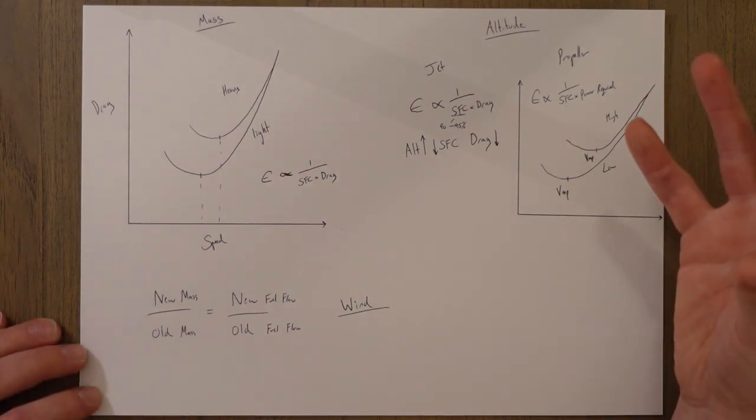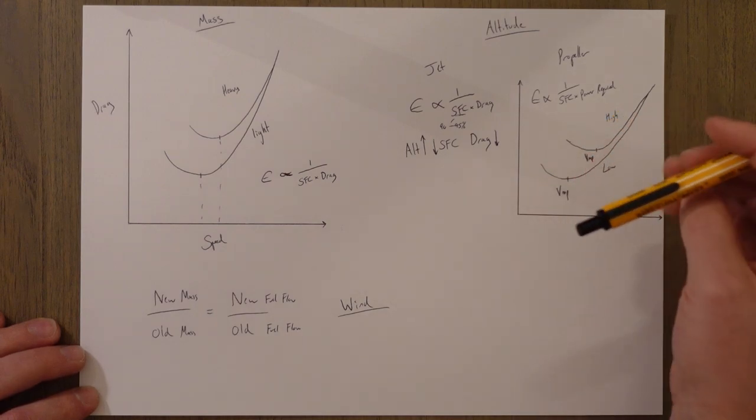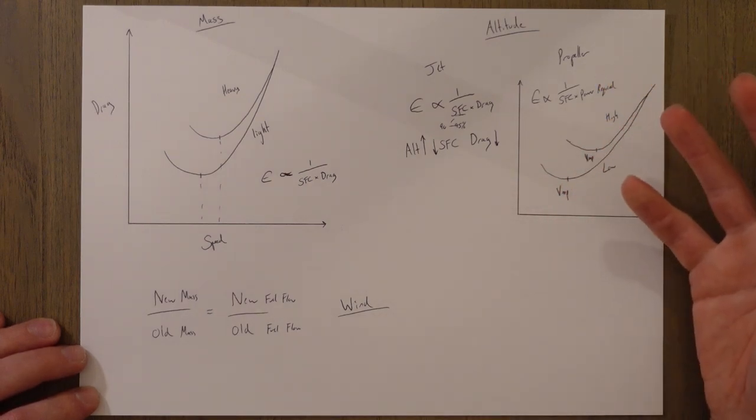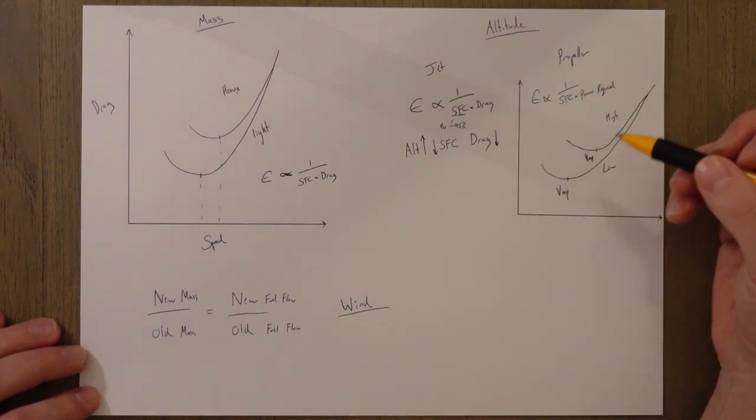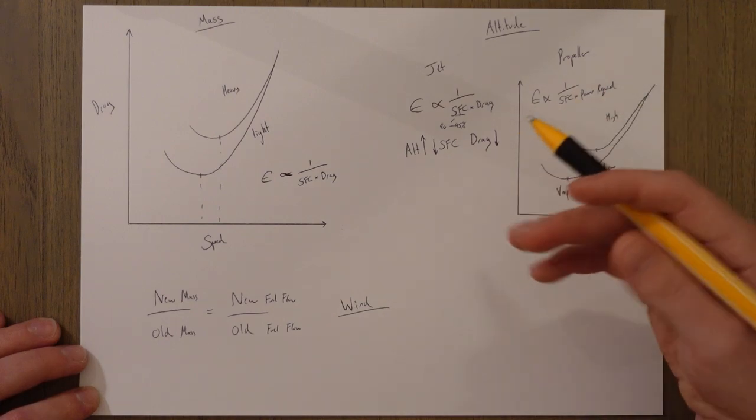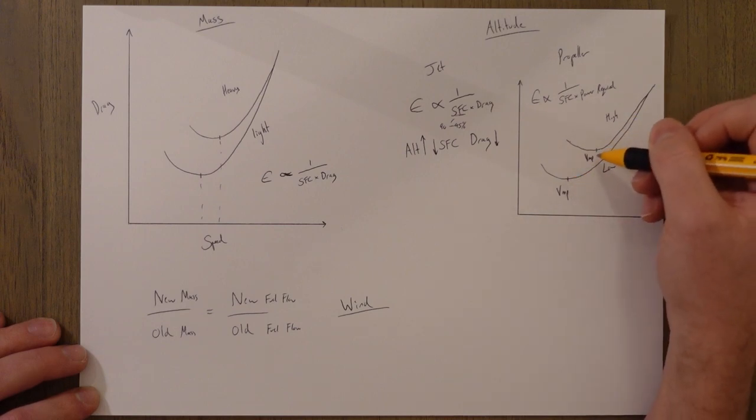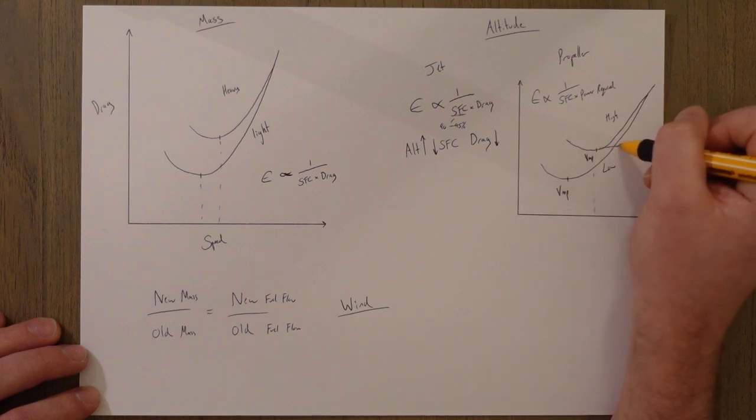For a propeller it's slightly different. If we're up high the power required curve moves up and to the right. This is because if we're higher up in less dense air we need to fly faster in order to produce the same amount of lift as lower down and the speed for best endurance Vmp is higher and that's a higher amount of power required.